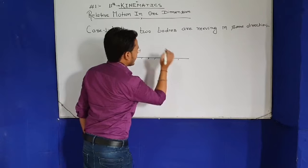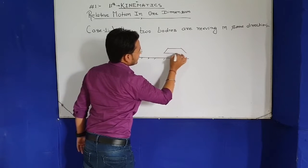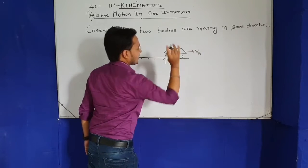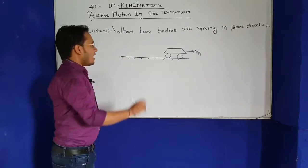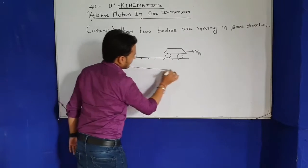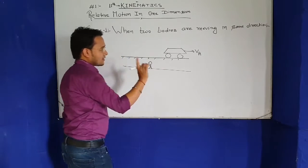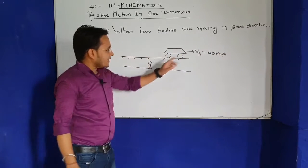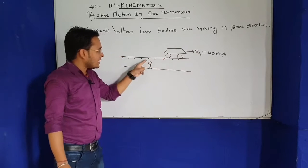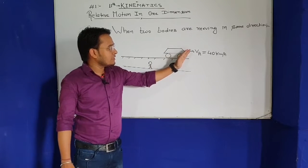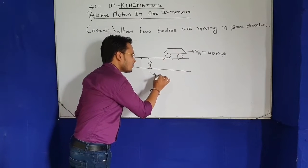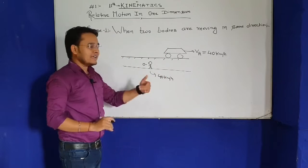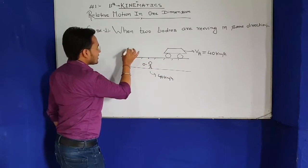Suppose this is a road where a car is moving with velocity V1, at 40 km per hour speed. The car is running, and if there is an observer watching this car from the roadside, this observer will see the car moving at 40 km per hour speed.